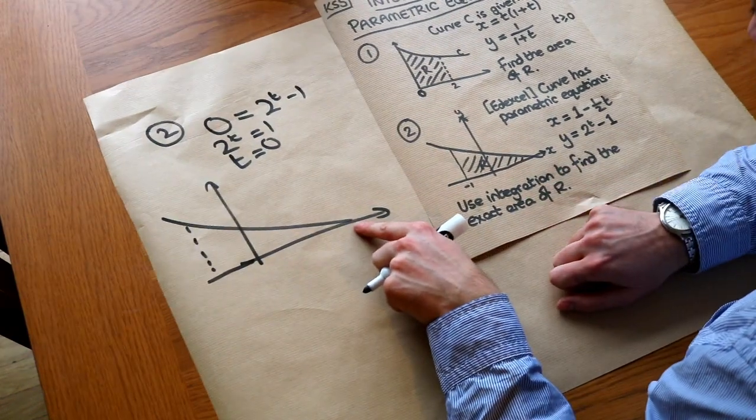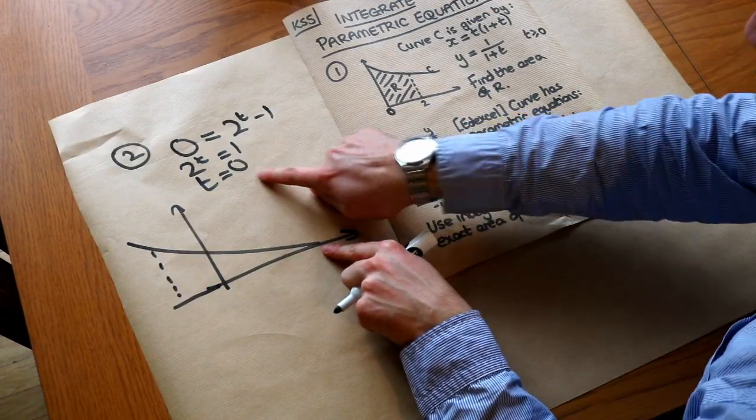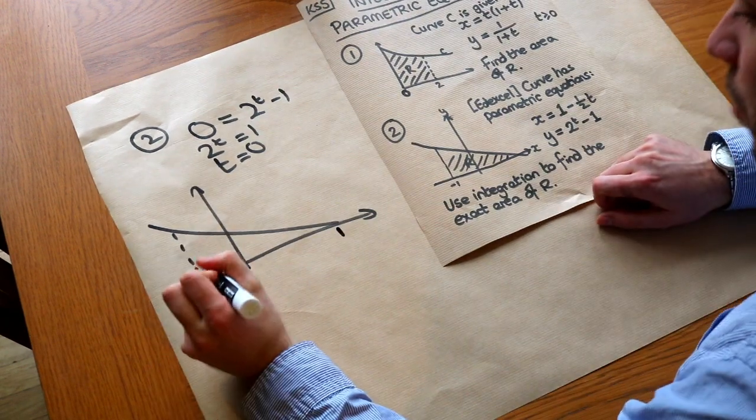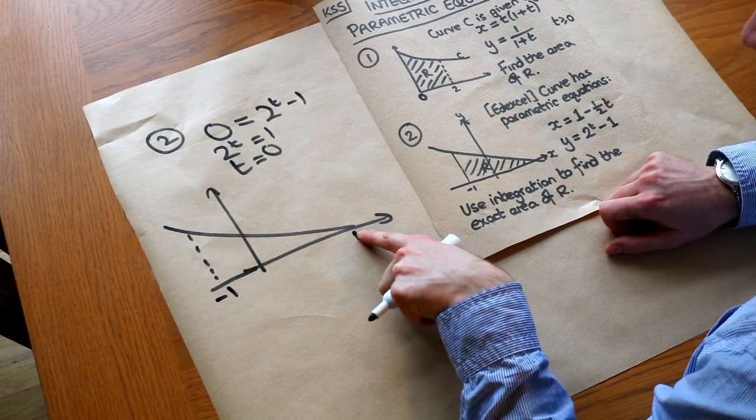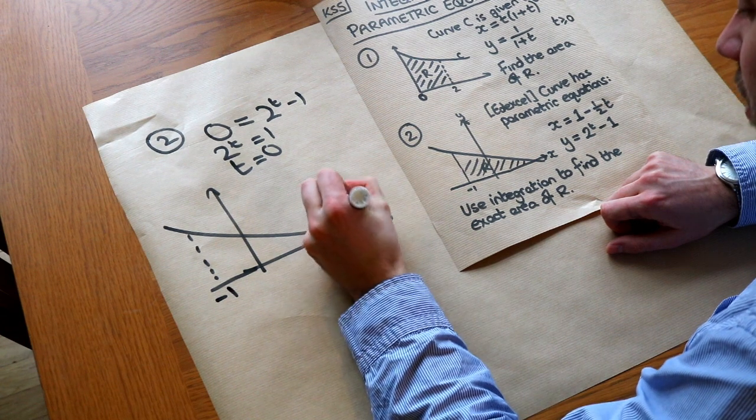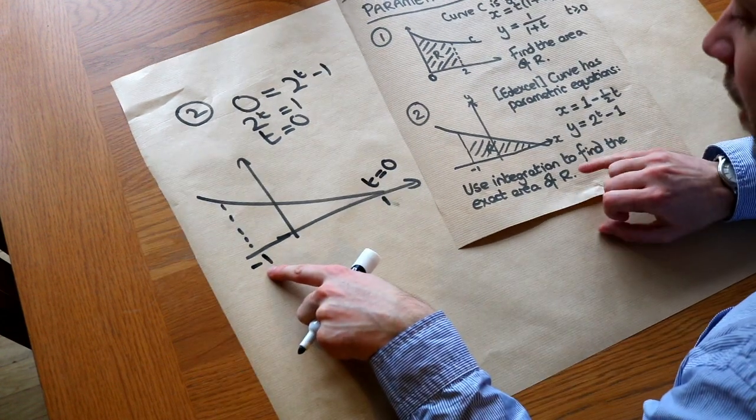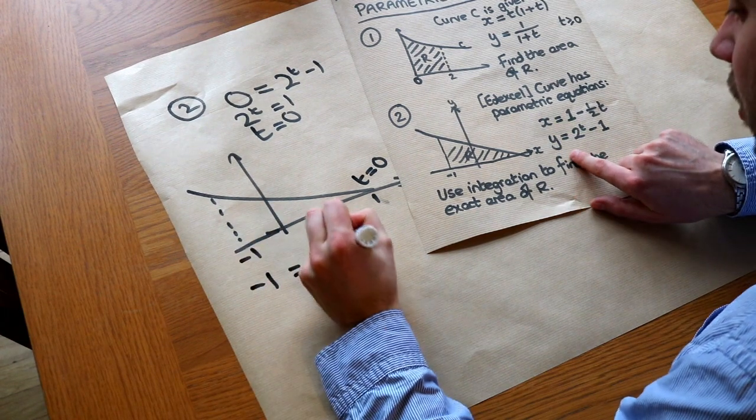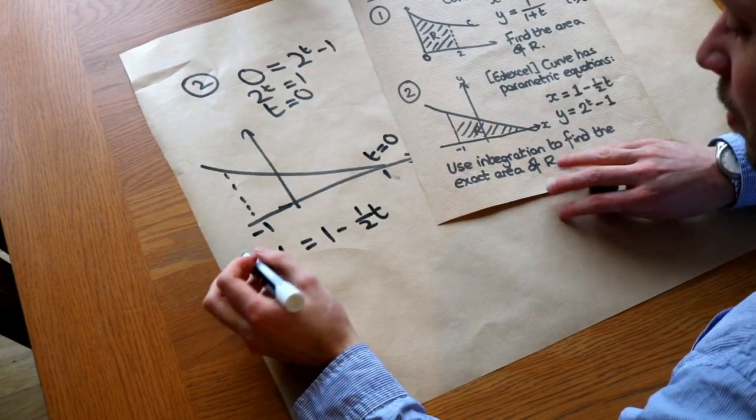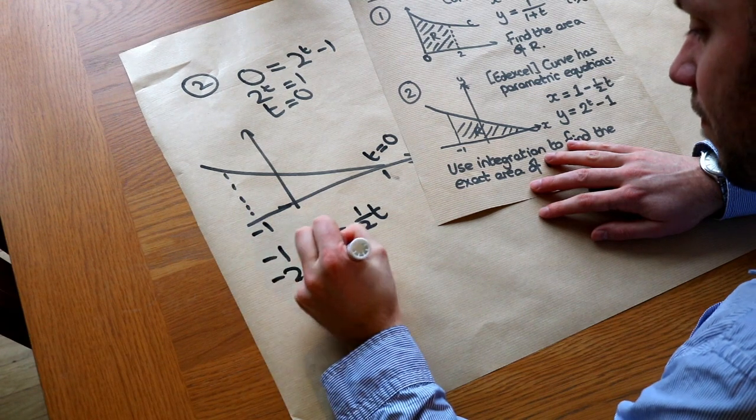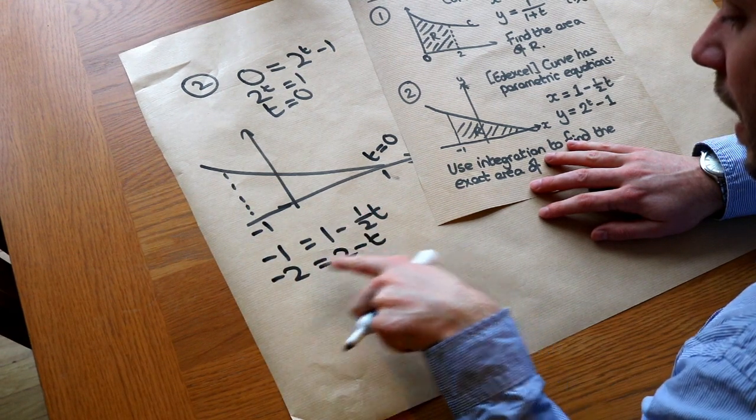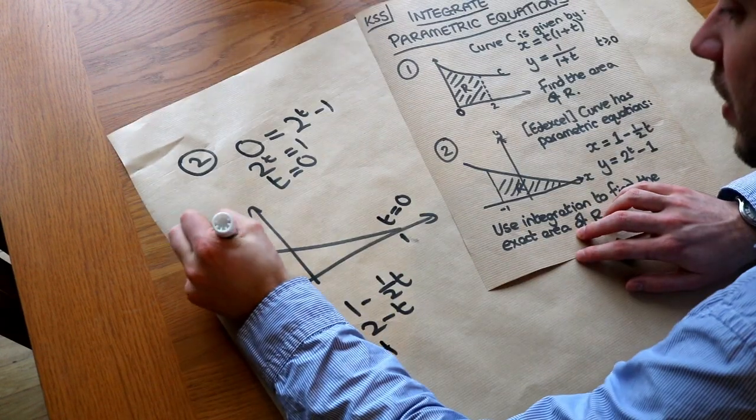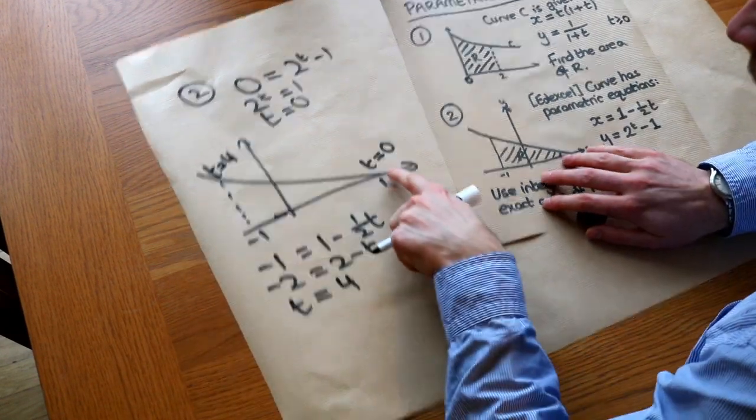So here, whatever the x value is, we could find the x now because we can just sub the 0 into here, so we can see the x would be 1, and the x here is minus 1. But we saw at this point, when y was 0, that the T value was equal to 0. And at this point, if x was equal to minus 1, we get minus 1 is equal to 1 minus half T. Let's just double both sides. And then add this T, and add this 2, so you get T is 4. So T is 4 here, and T is 0 here.